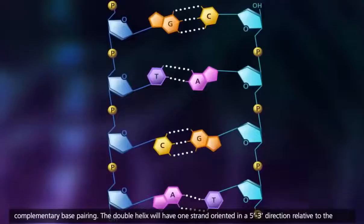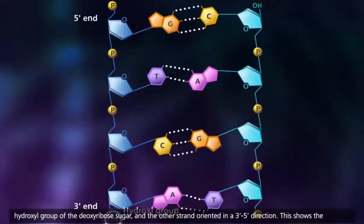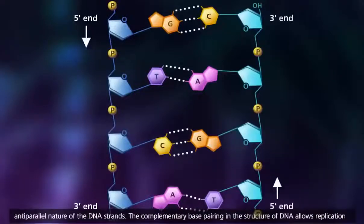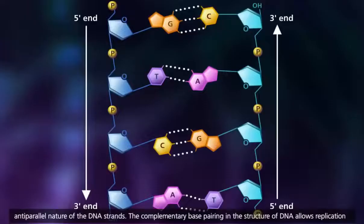The double helix will have one strand oriented in a 5' to 3' direction relative to the hydroxyl group of the deoxyribose sugar, and the other strand oriented in a 3' to 5' direction. This shows the anti-parallel nature of the DNA strands.